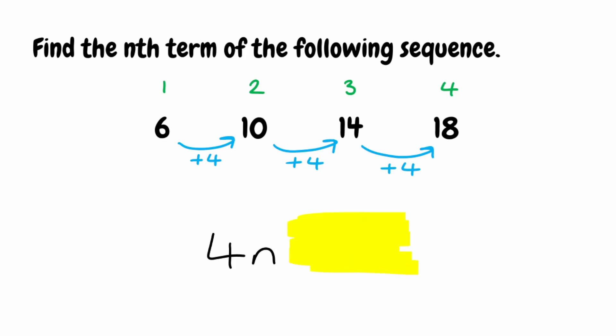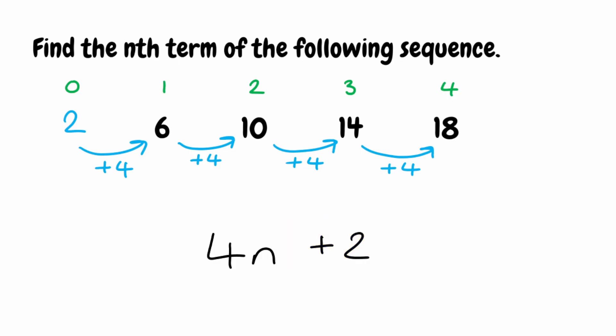We then need the bit that comes after it. To find this, we're going to look at our term numbers and find what we call term 0. We know the term-to-term rule was to add 4, so to get from term 0 to term 1, we must have also added 4. So what number, when we add 4, gives us 6? We do 6 take away 4, which gives us 2. Term number 0 is equal to 2, and that's what goes at the end — so plus 2. The nth term for this sequence is 4n + 2.